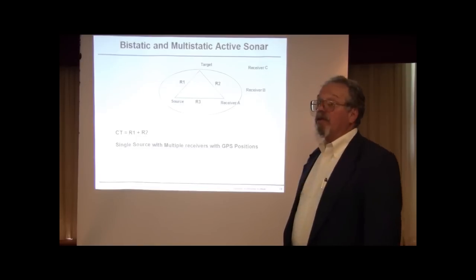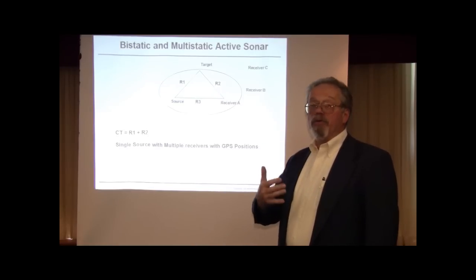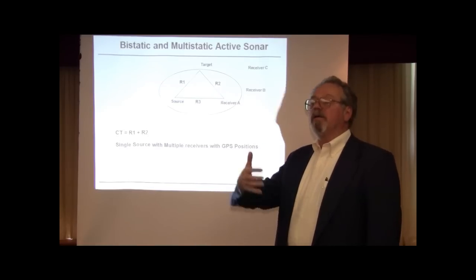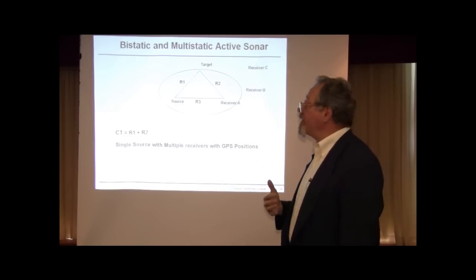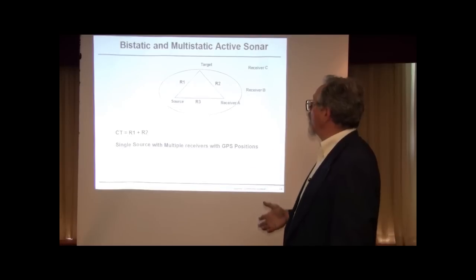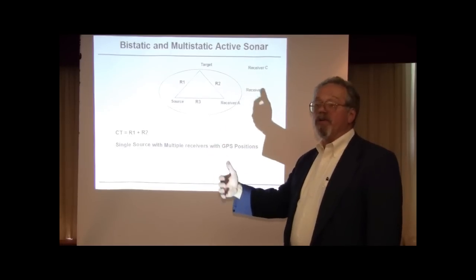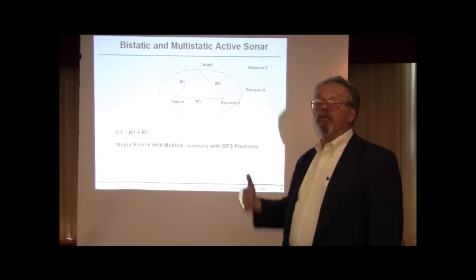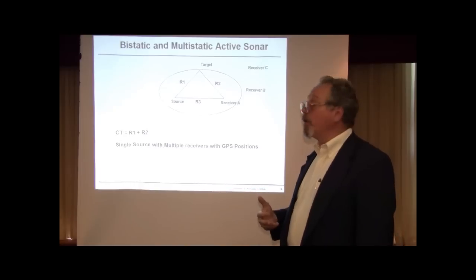Another case that is of interest is not monostatic sonar where you use the same transmitter to receive, or at least a nearly co-located receiver, and a monostatic or bistatic sonar. You transmit with one location, one source, it reflects off and goes to a totally different location where there may be a passive receiver to detect the sonar return.